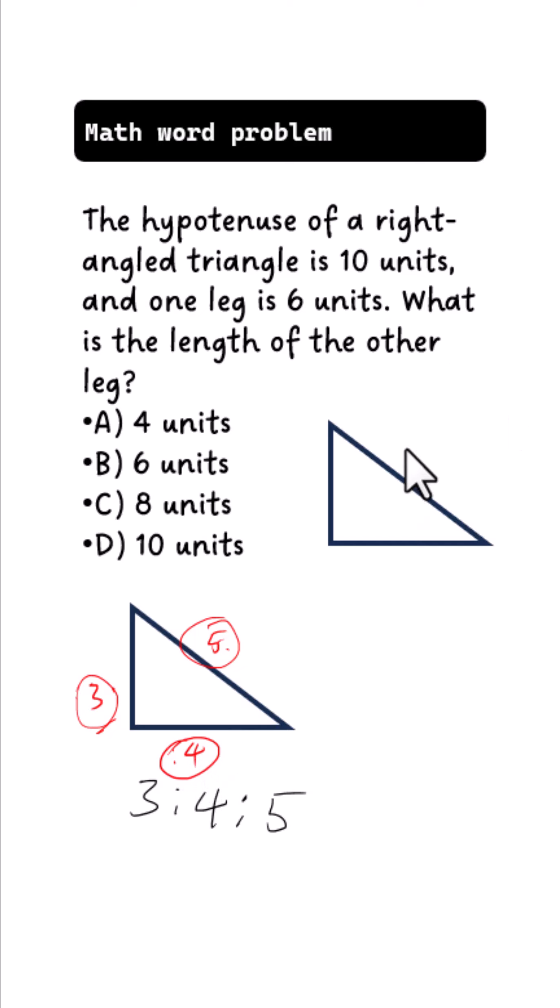So in this case, we have the hypotenuse to be 10. We have one of the legs to be 6. If you look at this, it is 3 ratio 5, because 3 times 2 is 6, and 5 times 2 is 10. So this is going to be the ratio of 4, which is 4 times 2, equals 8.